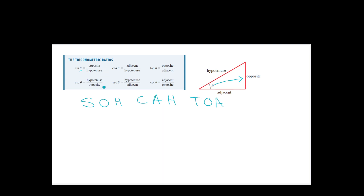You don't have to memorize cosecant, secant, and cotangent as long as you already have sine, cosine, and tangent down. That's why we have this mnemonic called SOH-CAH-TOA — it just takes care of sine, cosine, and tangent.